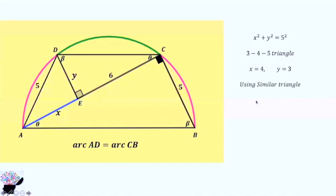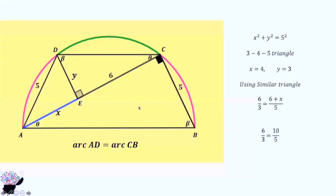Let us prove it using similar triangles. Using similar triangles, we get 6 divided by Y — and Y is 3 — which is equal to 6 plus X, divided by 5. So 6 divided by 3 is equal to 10 divided by 5. We can see that using similar triangles, X and Y are confirmed correct: X is 4 and Y is 3. Triangle DEC is similar to triangle ACB. So X is 4, and that is the answer.